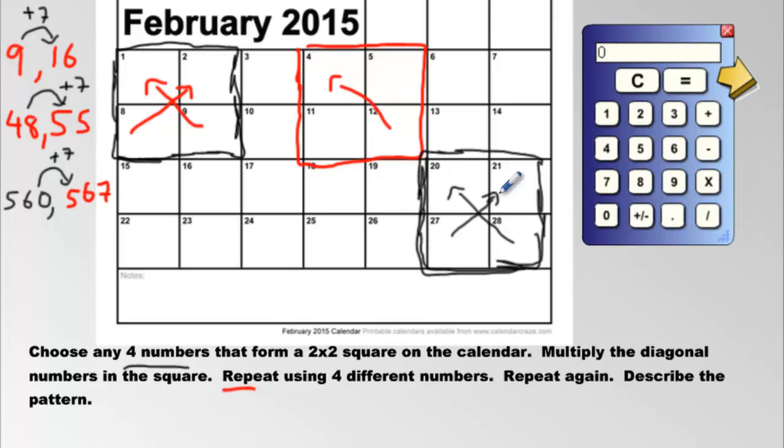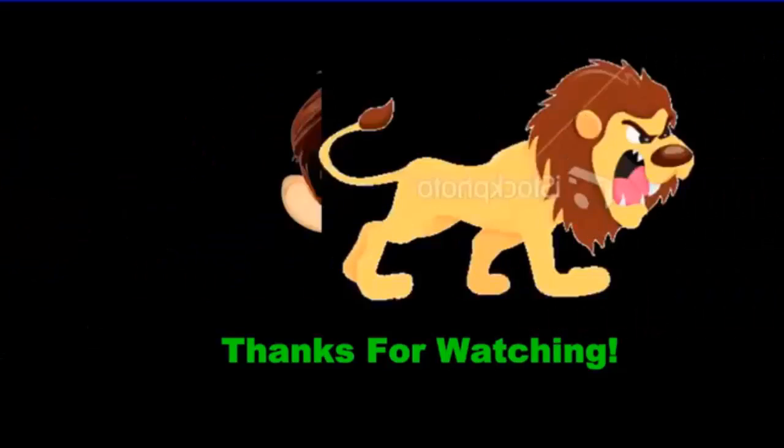27 multiplied by 21, drum roll please, moment of truth. Oh baby, 567, it works out! Done, 567.